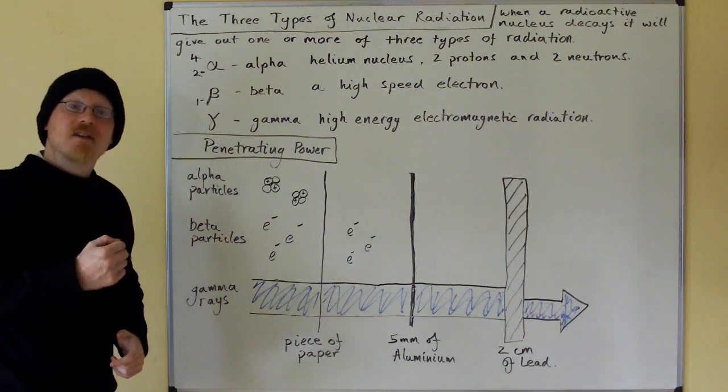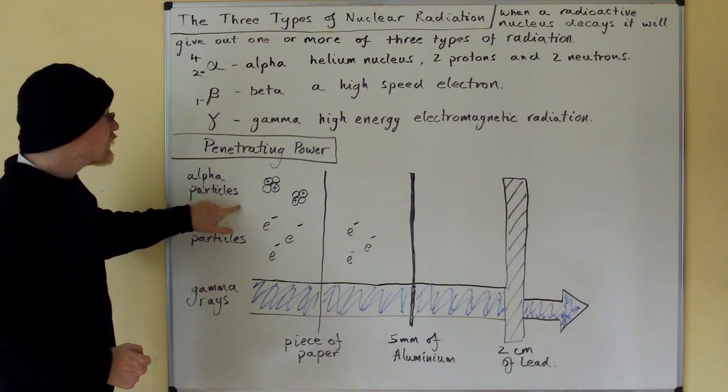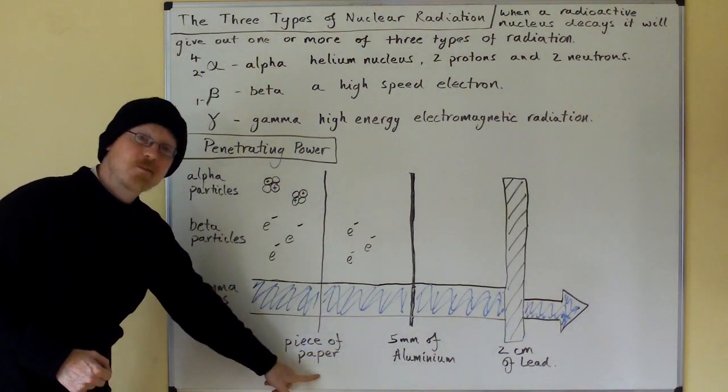Penetrating power. The different types of radiation have different penetrating powers. Alpha particles, helium nuclei, are stopped by a piece of paper.